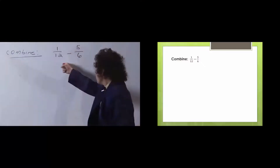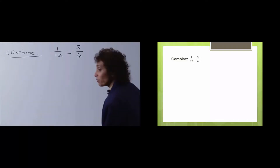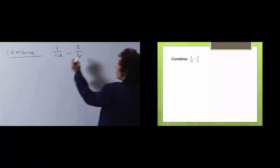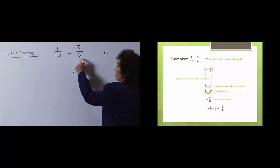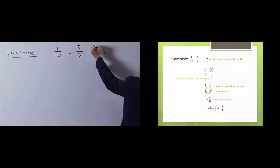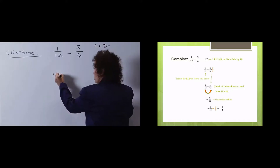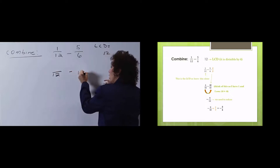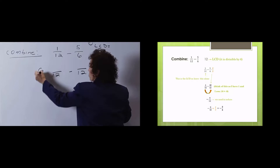So those are the steps. Let's take a look at this question. First thing you want to know is: does it have an LCD? It does not have a common denominator, so I have to find one. I take the biggest number, which is 12, and say to myself: does 6 divide into 12 evenly? And the answer is yes. So the LCD is 12. That's the first step. Second step is now to build these fractions so they all have a denominator of 12.